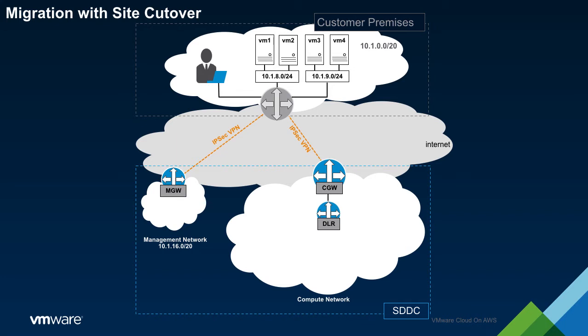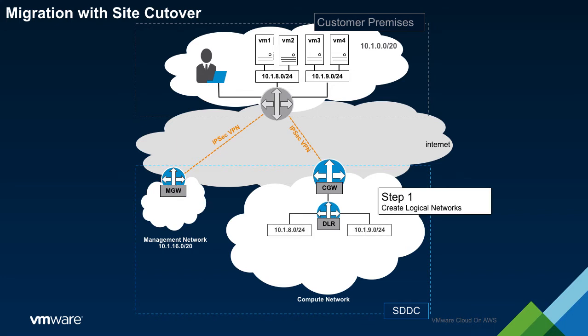As such, all of the networks will be ported to the SDDC and the workloads themselves will retain their IP addresses. The first step is to configure logical networks within the SDDC which mirror those used in the on-prem network. Next, the workloads will be replicated to the SDDC. For this, either Site Recovery or HCX may be used.